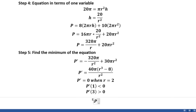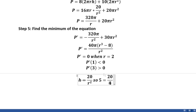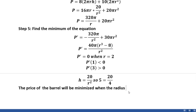Our last step is simply determining the height, since we already have the radius r = 2. Remember, we were trying to find the dimensions of the can. We know that h = 20/r². Plugging in r = 2 gives us h = 20/4 = 5. So our final answer is h = 5.